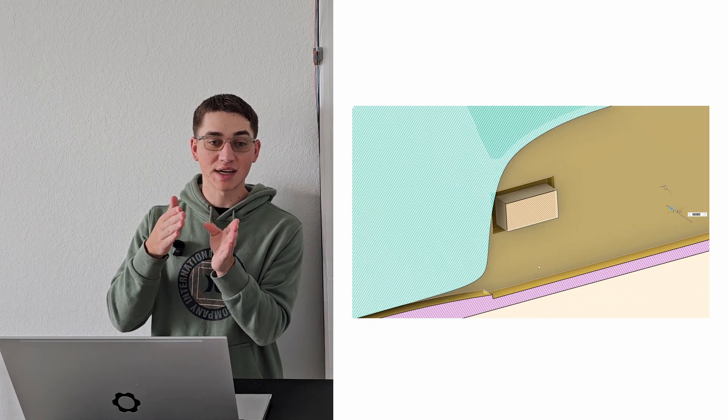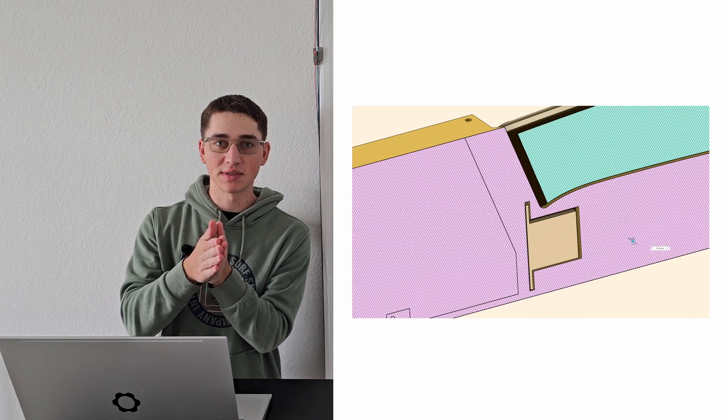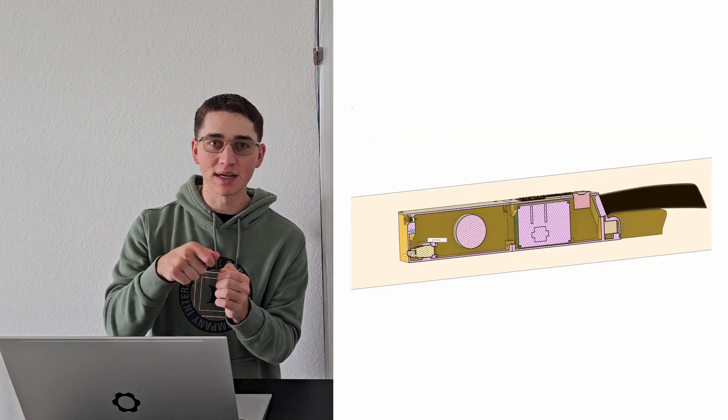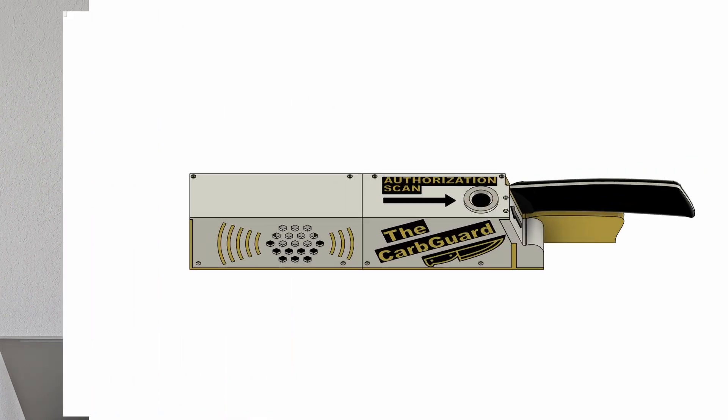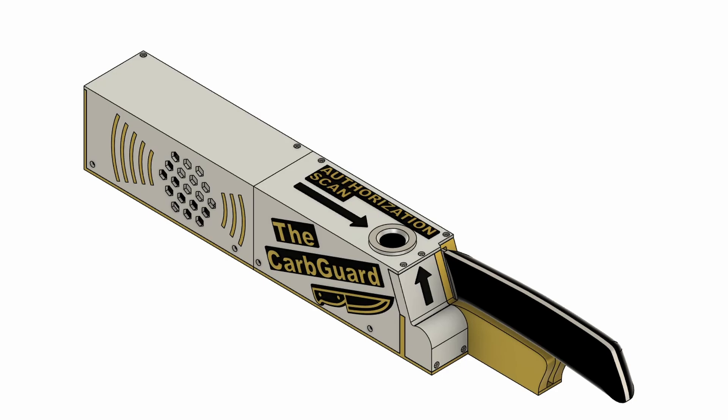I even bored out a little hole on the opposite side of the entryway so the solenoid plunger will actually extend past the entrance, making it impossible for somebody to just force the blade through. Lastly, I designed some walls to fully enclose the components and dubbed it the Carb Guard. After tossing on some stylish labels, I sent the files over to the printer.